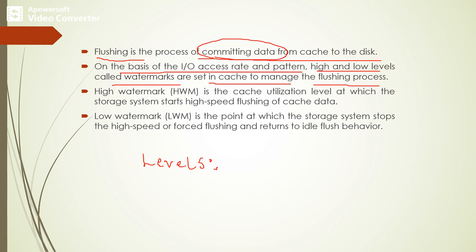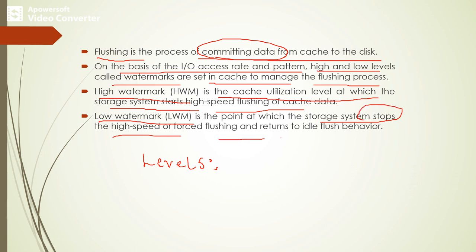High watermark level is a cache utilization level at which the storage system starts high-speed flushing of the cached data. Low watermark level is the point at which the storage system stops the high-speed or forced flushing and returns to ideal flush behavior. There are three different techniques to copy data from the cache into the disk: ideal flushing, high watermark flushing, and forced flushing.